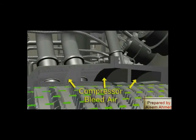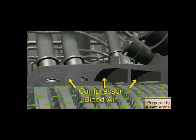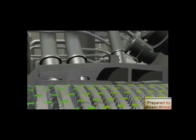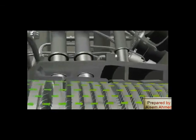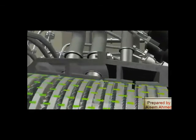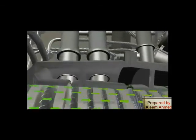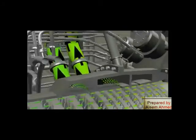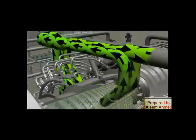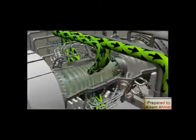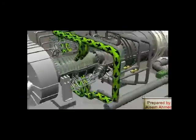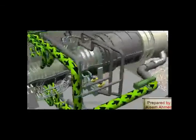Stages nine and thirteen of the compressor serve several unique purposes. During startup of the CT, these stages are bled off to the turbine exhaust via the compressor bleed valves for compressor surge protection.